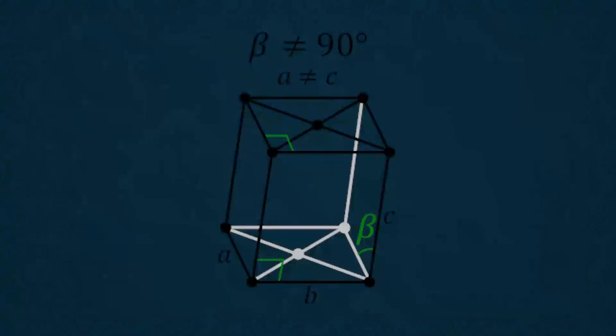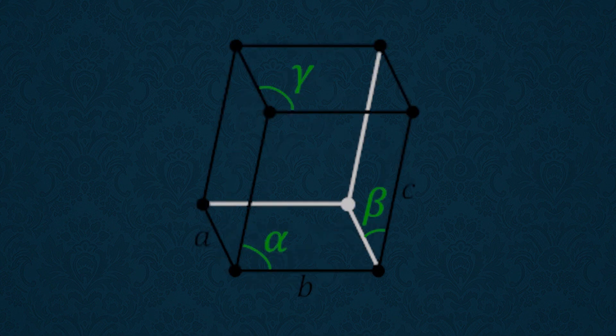The crystal axes can have different linear and angular relationships. The angles between the positive ends of the axes are conventionally designated by the Greek letters alpha, beta, and gamma. On the basis of the linear and angular relationship of the axes, all crystals are grouped under six crystal systems.